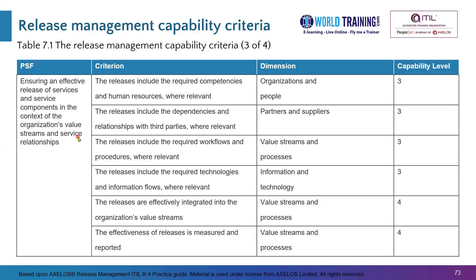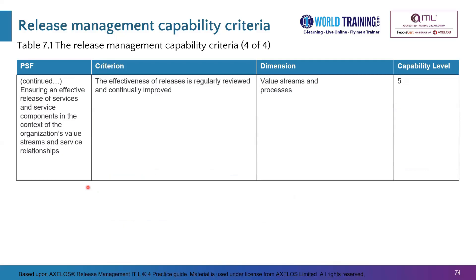Still at level 3 for the second PSF, further criteria include: releases include required competencies and human resources, dependencies and relationships with third parties, required workflows and procedures, and required technologies and information flows. At level 4, releases are effectively integrated into the organization's value stream, and the effectiveness of releases is measured and reported. At level 5, the effectiveness is regularly reviewed and continually improved.